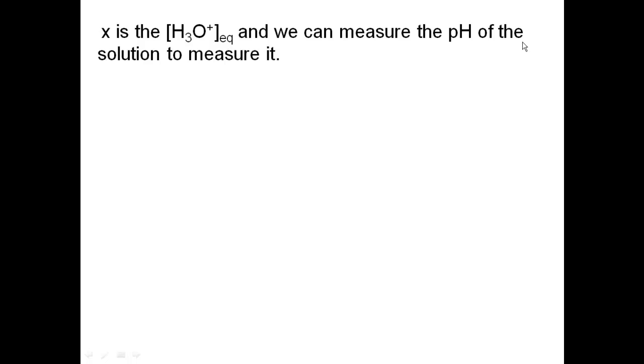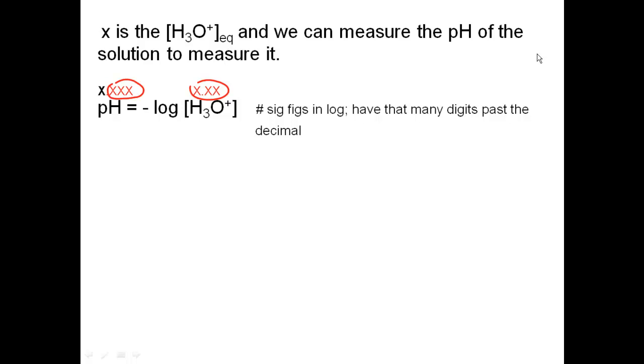Now, let's refresh our memory on how to calculate pH from hydronium, hydronium from pH. Calculation pH is equal to the negative log of the concentration of hydronium ion. Now, the sig figs on this is the number of sig figs in a log, I have that many digits past the decimal. So, that means if I had three sig figs in my hydronium ion concentration, and I took the log of that, then that's telling me I need three digits past the decimal on my pH. The other equation we know is hydronium ion is equal to 10 to the negative pH.